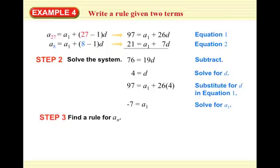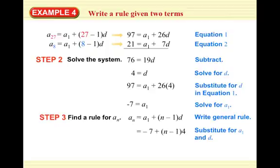Now we can write the rule for A_N. In general, it equals the first term plus (N minus 1) times D. Substituting A1 equals negative 7 and D equals 4: negative 7 plus (N minus 1) times 4. Distributing and simplifying, the nth term equals negative 11 plus 4N.